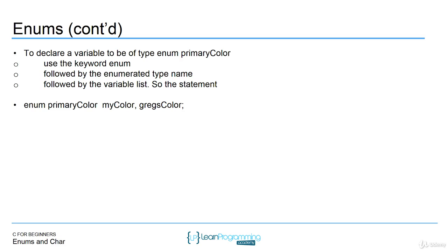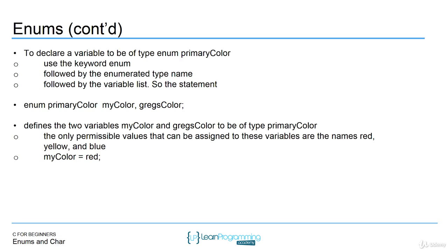We're declaring variables of primary color type — my color and Greg's color. The only permissible values that can be assigned to these two variables are red, yellow, and blue. So we could say my color equals red, and that's perfectly valid. We could not say my color equals green — that wouldn't work because those values aren't valid for that enum type. This is a very powerful data type because you're essentially defining your own data types that can contain only certain values.